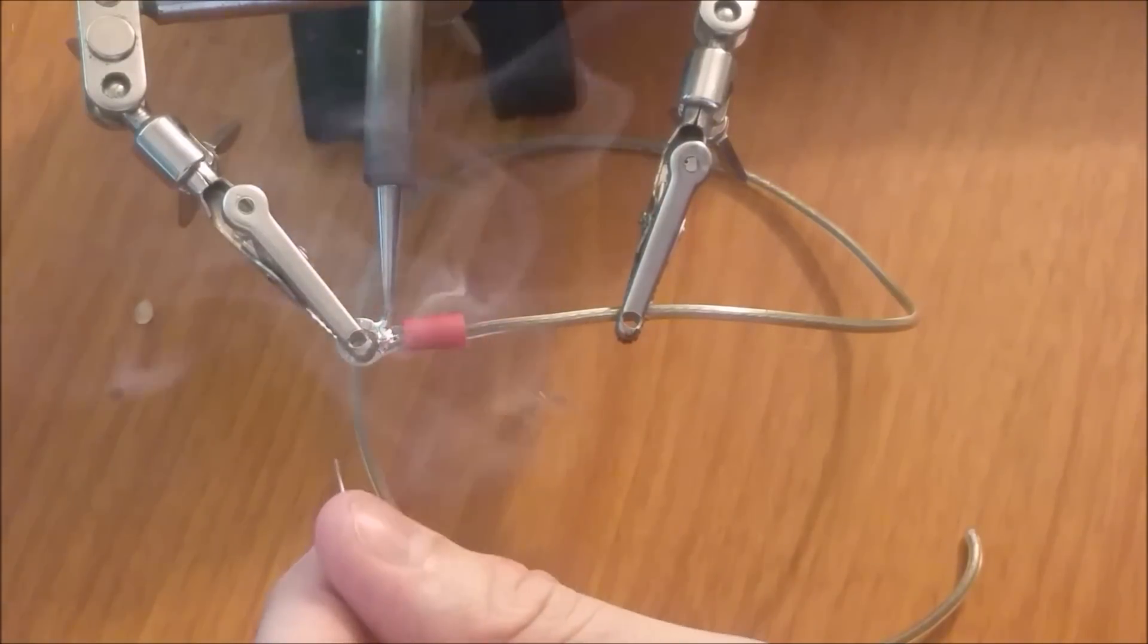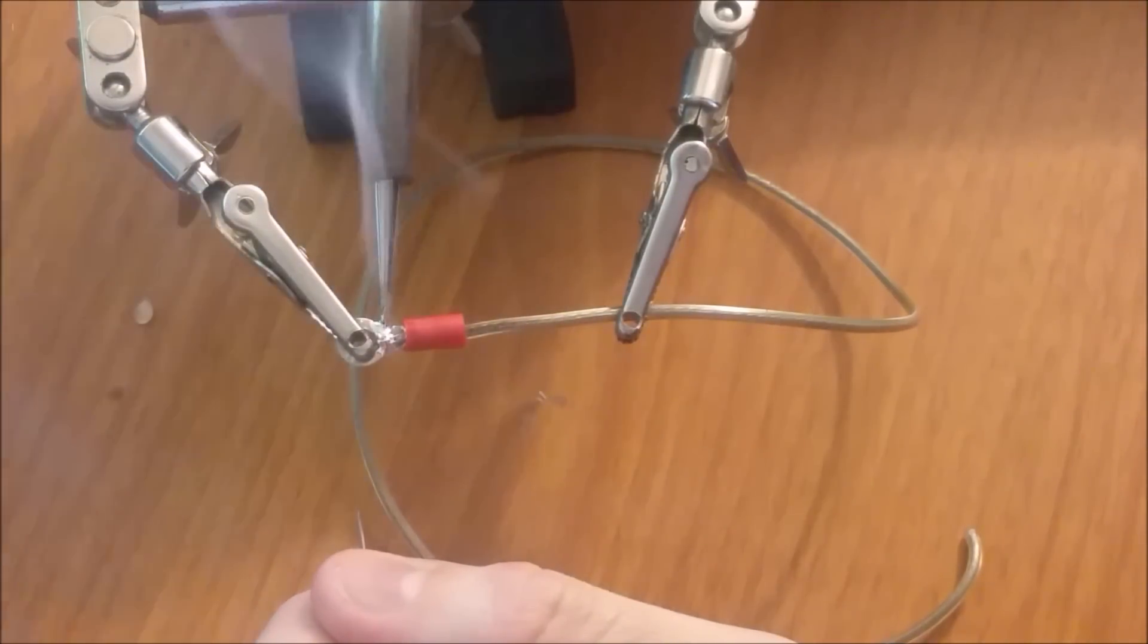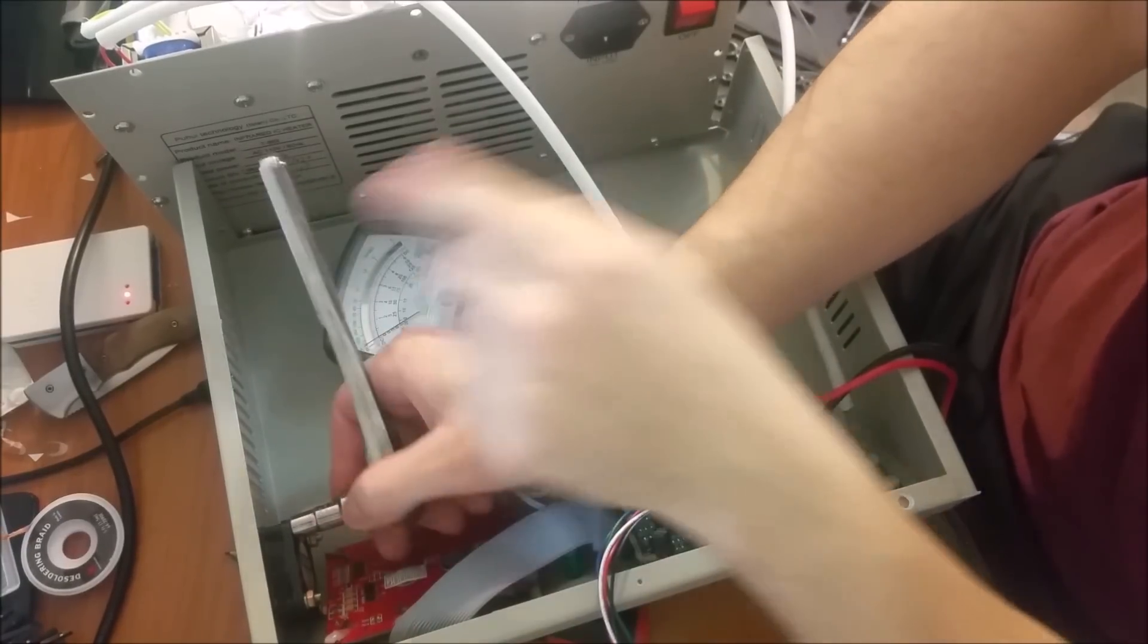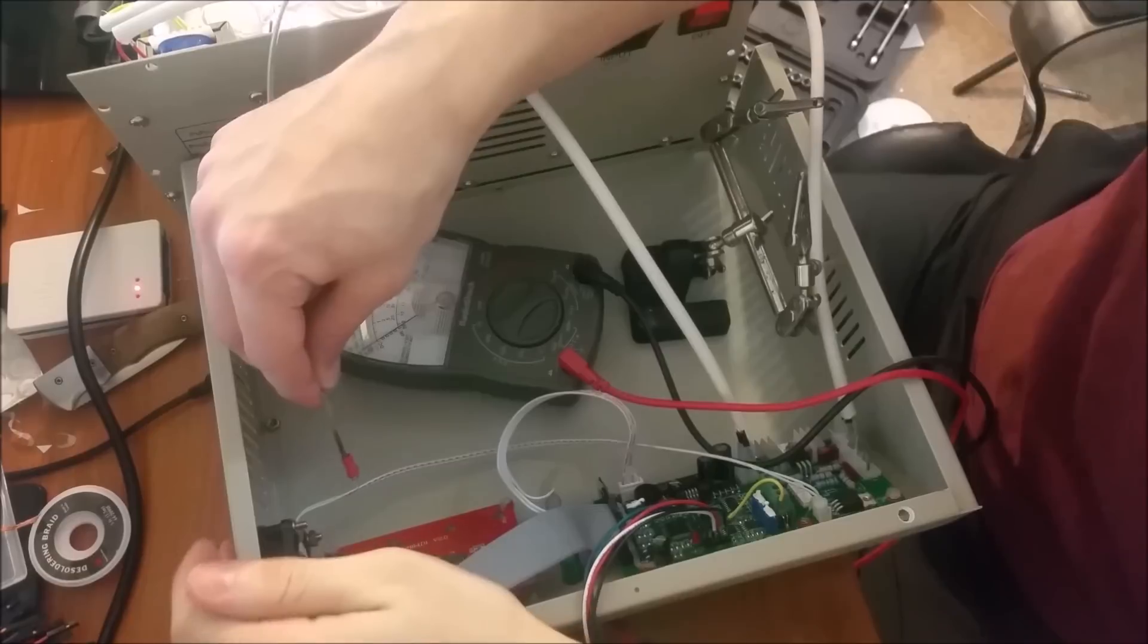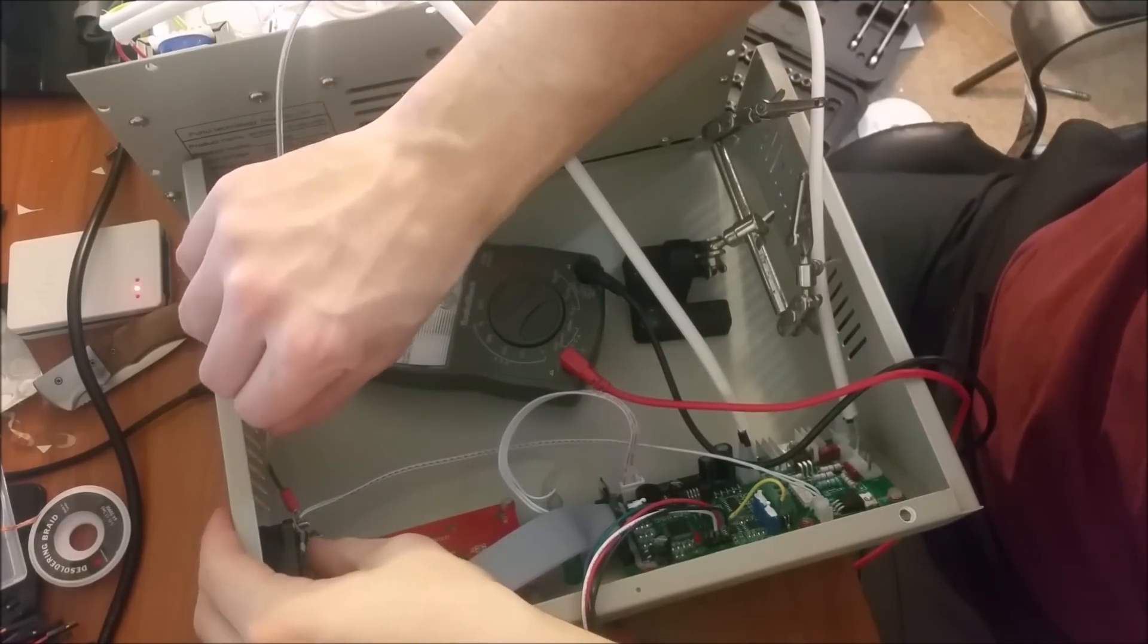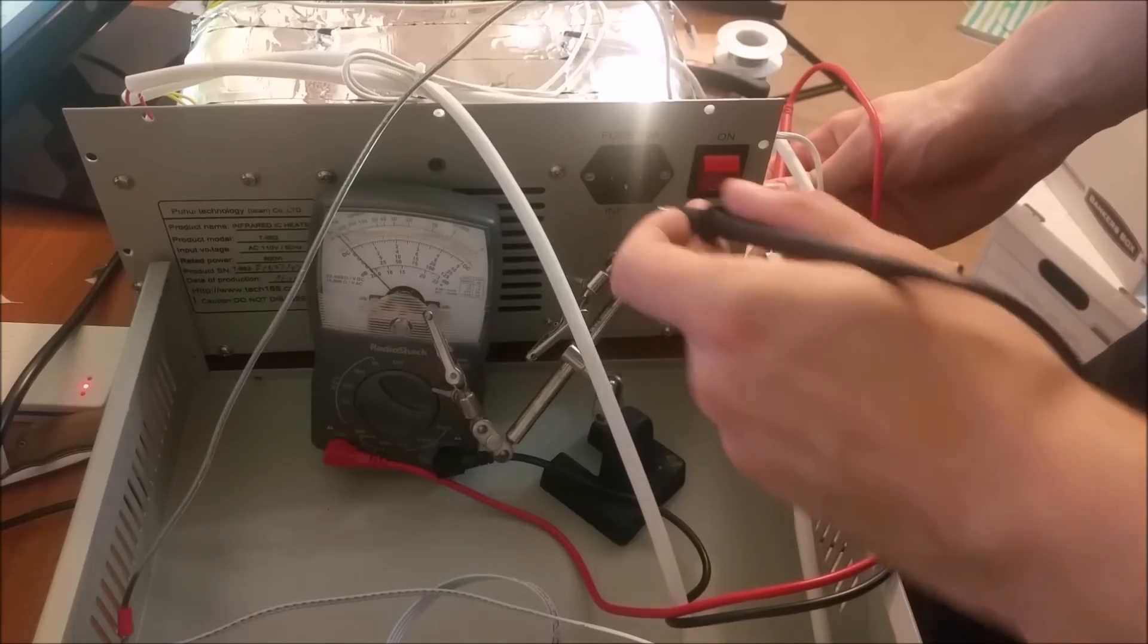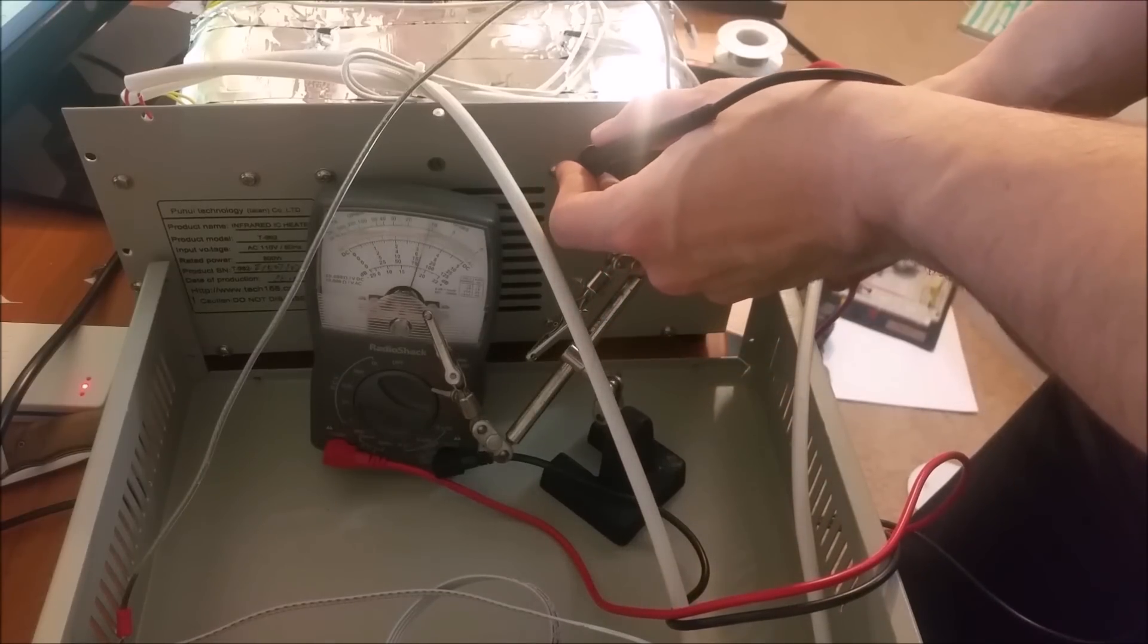Solder an eyelet to one end of the thick wire. Here I'm using speaker wire. Loop the eyelet on the bolt to the case. Solder the other eyelet onto the other end of the wire. I decided to connect the other end of the wire to the bolt on the small fan. Now is a good time to check to see if the top and bottom components of the case are properly grounded using a multimeter.